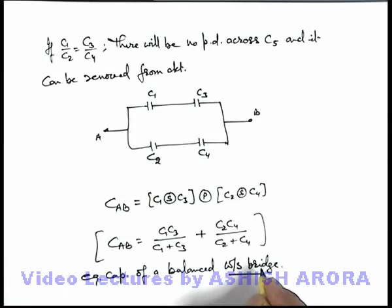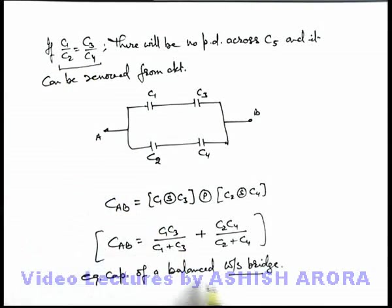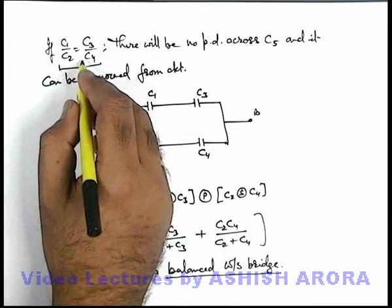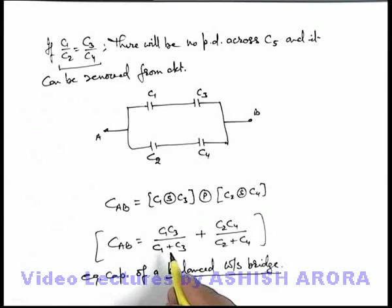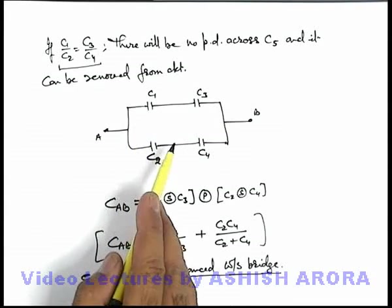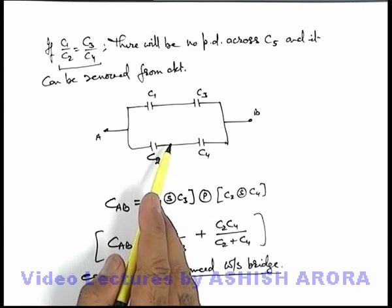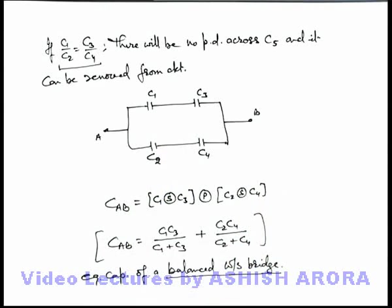Such a Wheatstone Bridge in which the ratio of these capacitances are equal is said to be a balanced Wheatstone Bridge, and this is called balancing condition as we have already discussed. Whenever a Wheatstone Bridge is unbalanced, such kind of cases we need to handle with the help of nodal analysis that we'll discuss in some solved examples now.